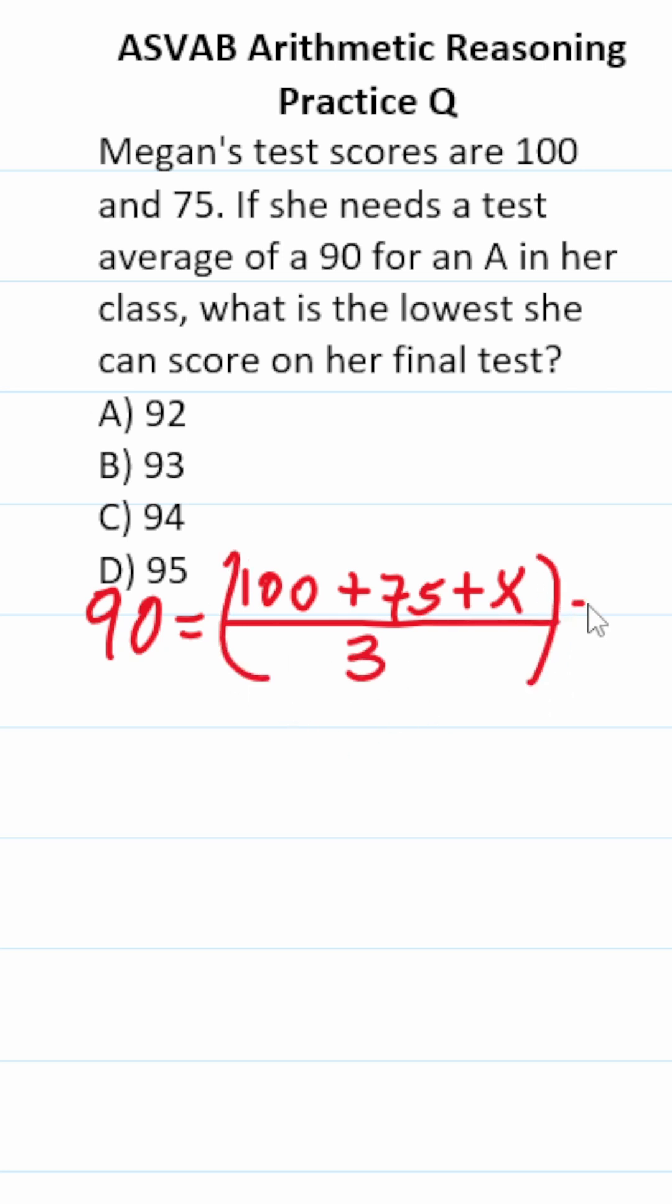Now let's clear 3 from this denominator by multiplying it to both sides. This crosses out. What's 100 plus 75? That's 175. So this is 175 plus X over here.